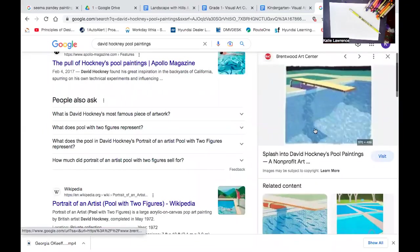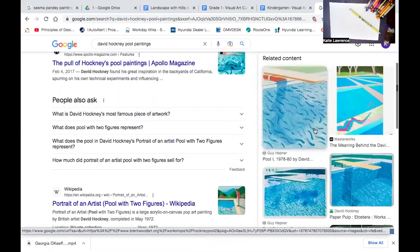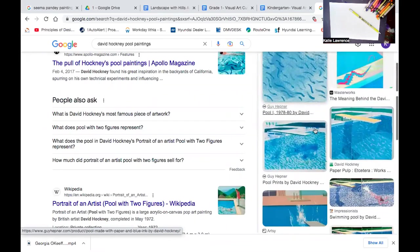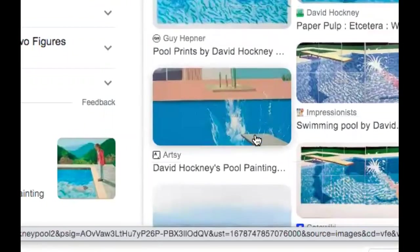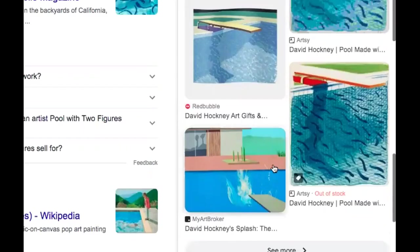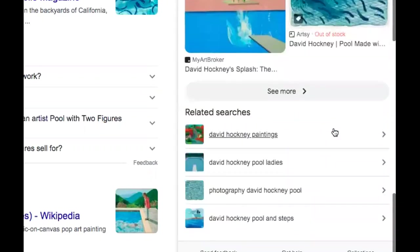His name is David Hockney and he does paintings of swimming pools. This is his most famous one, Bigger Splash. He is from England, but he goes back and forth to California because he loves our hot weather.